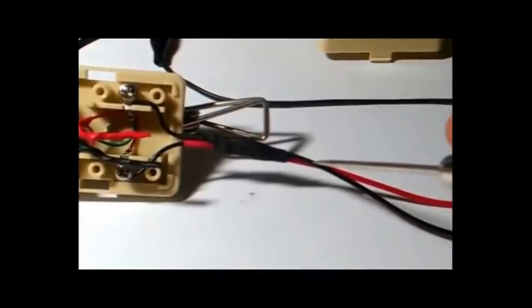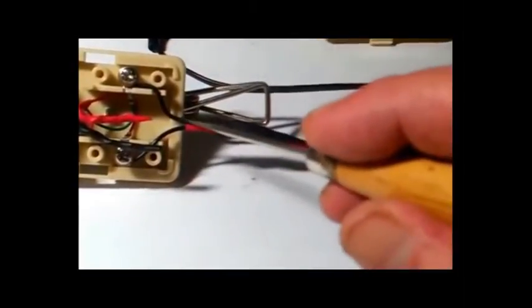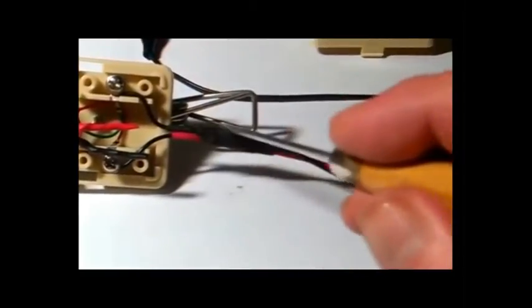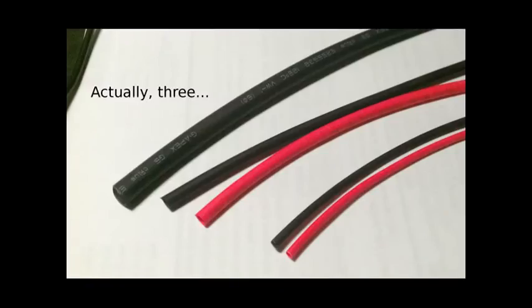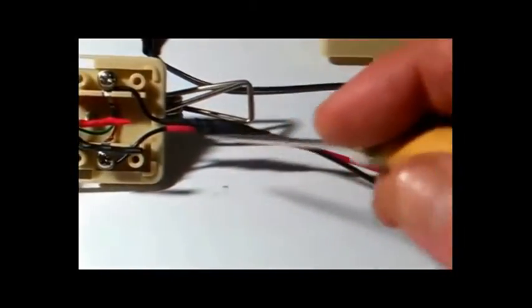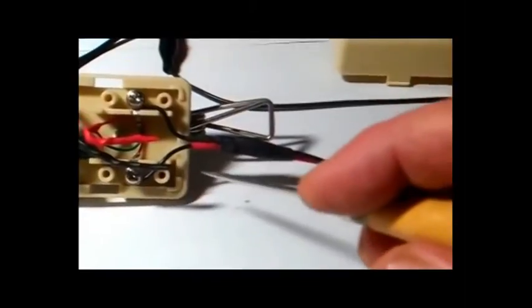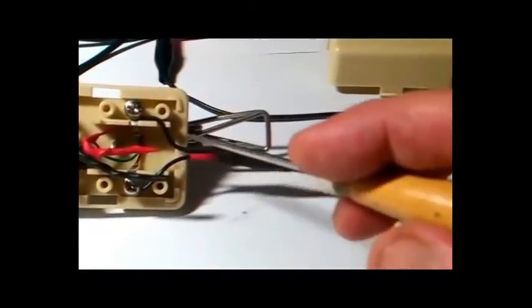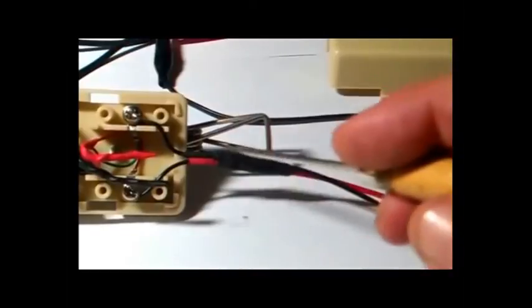And then I've taken this heat shrink tubing, there's two different sizes here, small and large, and just sort of used it to hold that joint together, give it more mechanical strength. I've done that with both the anode in red and the cathode in black, and then I took a much larger piece of heat shrink tubing and put it over the entire joint holding both of these together.